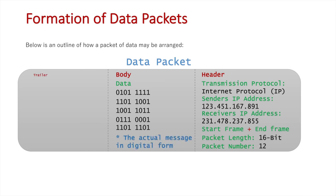In the final section we have our trailer, which has the end-packet data to signal this is the end of the packet. It also includes our error detection method — for IP used in conjunction with the TCP protocol, this is checksum — and our checksum value, which equates to 192. The receiver will check the data packet, conduct its own calculation, and make sure it also gets 192.